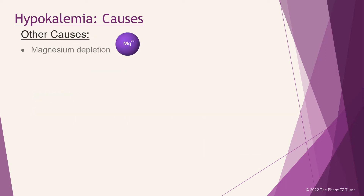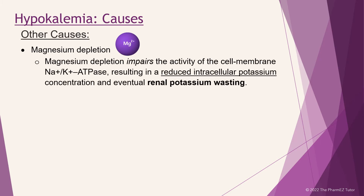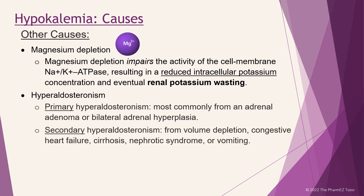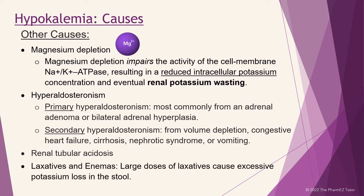Other causes of hypokalemia include magnesium depletion. Magnesium depletion impairs the activity of the cell membrane sodium-potassium ATPase, resulting in a reduced intracellular potassium concentration and eventual renal potassium wasting. There are two types of hyperaldosteronism that can cause hypokalemia: primary hyperaldosteronism, most commonly from an adrenal adenoma or bilateral adrenal hyperplasia; and secondary hyperaldosteronism caused from volume depletion, congestive heart failure, cirrhosis, nephrotic syndrome, or vomiting. Other causes include renal tubular acidosis, and drugs such as laxatives and enemas, which cause excessive potassium loss in the stool.